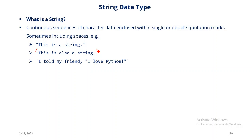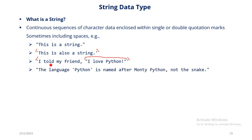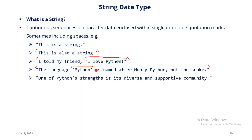You can have reported speech like: 'I told my friend, "I love Python"' — single quotes on the outside, double quotes on the inside. This can also be reversed: "The language 'Python' is named after Monty Python, not the snake" — double quotes on the outside, single quotes on the inside. The data type is represented under the str class — str is short for string — which is the class the creators of Python made to enable you to create string variables.